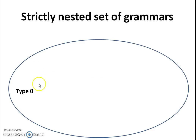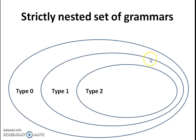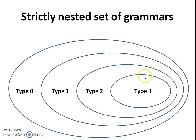Let's consider the hierarchy. If I have Type 0 grammar here, this is defined by a set; then I have Type 1 grammar defined by another set, Type 2 grammar defined by another set, and Type 3 grammar defined by another set. In this scenario, we can see that Type 3 is enclosed within Type 2, Type 2 is enclosed within Type 1, and Type 1 is enclosed within Type 0.